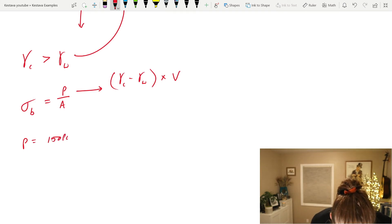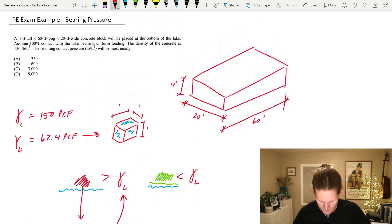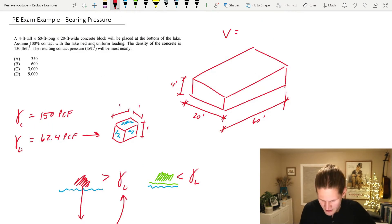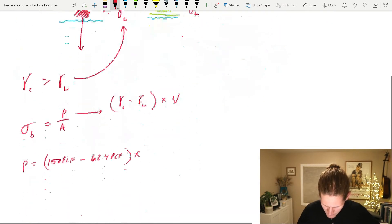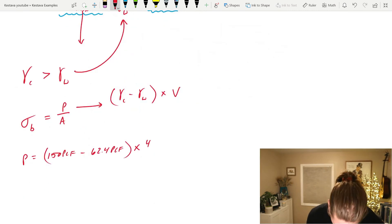P is going to equal 150 PCF minus 62.4 PCF, put that in parentheses, and then multiply it by our volume. Our volume is equal to 4 feet times 20 feet times 60 feet, the total sum of the volume of your mass of concrete. That equals 4,800 cubic feet. Let's take that info, plug it in here, 4,800. That gets you a total force P of 420,480 pounds.